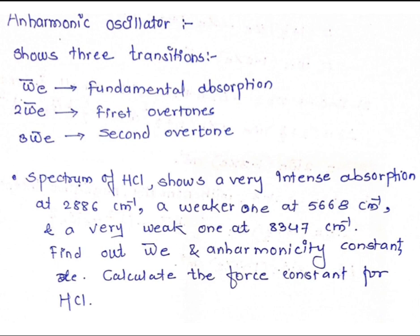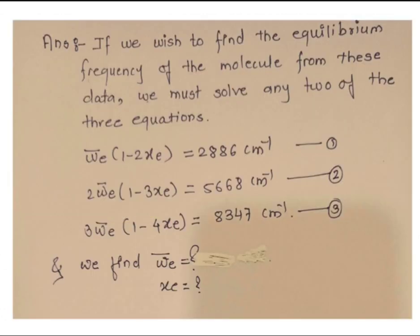The much weaker absorption is found at 8347 cm⁻¹. From this data we need to find ω̄e, the anharmonicity constant xe, and then calculate the force constant k for the SCl molecule. We will set up three equations to solve for ω̄e and xe.